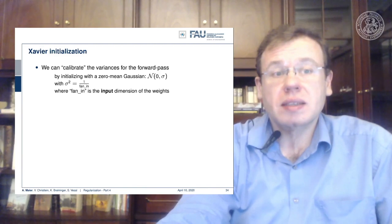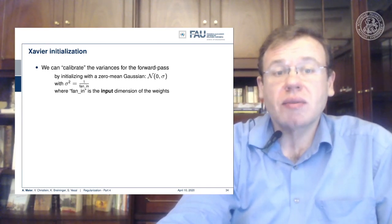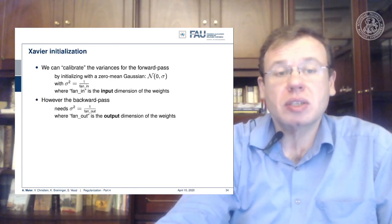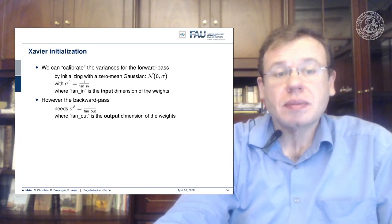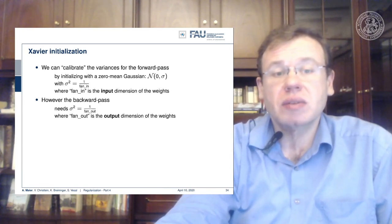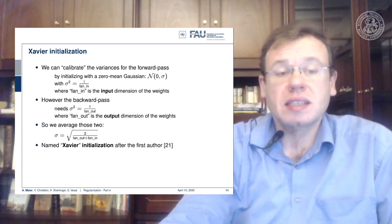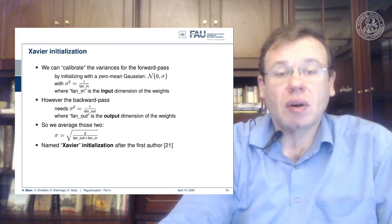As a result, we can work with Xavier initialization. So we calibrate the variances for the forward pass. We initialize with a zero mean Gaussian, and we simply set the standard deviation to 1 over fan-in, where fan-in is the input dimension of the weights. So we simply scale the variance to be 1 over the number of input dimensions. In the backward pass, however, we would need the same effect backwards. So we would have to scale the standard deviation with 1 over fan-out, where fan-out is the output dimension of the weights. So you just average those two and compute a new standard deviation. And this initialization is called after the first author of reference 21.